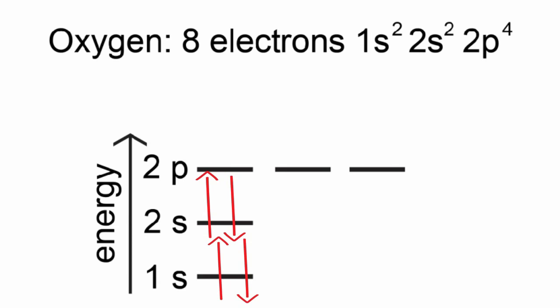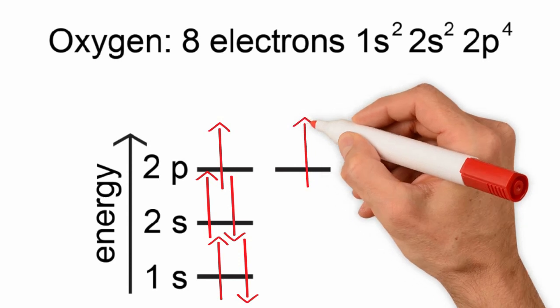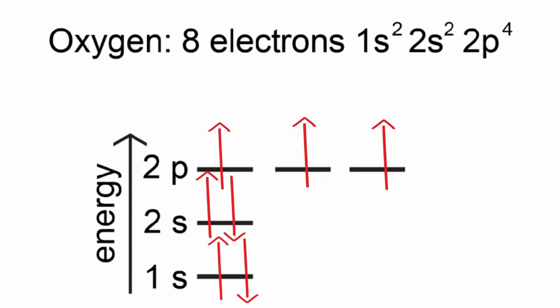That leaves 4 electrons to fill the 2p orbitals. Remember Hund's rule, and place 1 electron with the same spin orientation in each of the 3p orbitals before pairing the 4th electron.